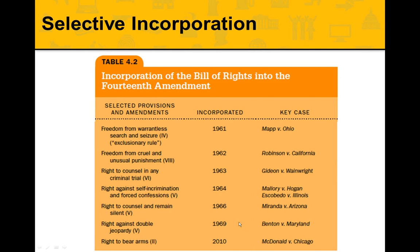So the doctrine of incorporation is applying the Bill of Rights to the states through the 14th Amendment. Originally this was selective incorporation, where the different provisions of the Bill of Rights were considered one by one and selectively applied, striking down state laws that infringed upon freedom of expression. Eventually all the different types of rights found in the Bill of Rights are incorporated to the states.